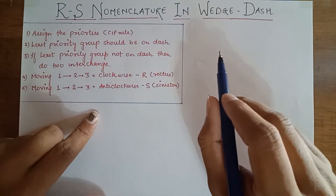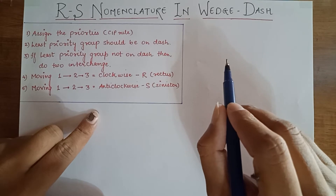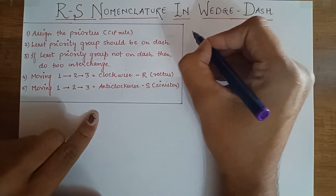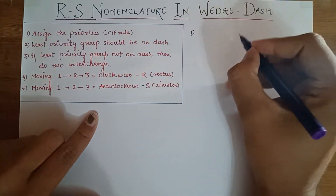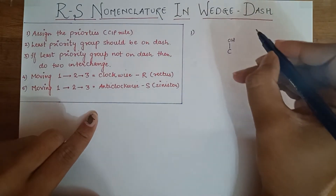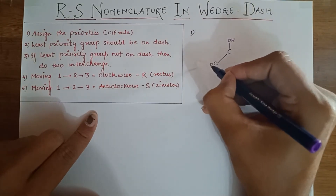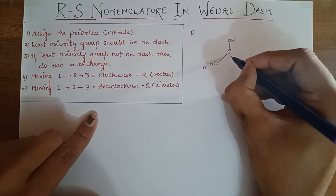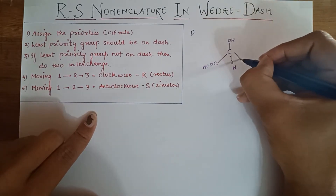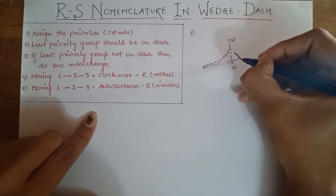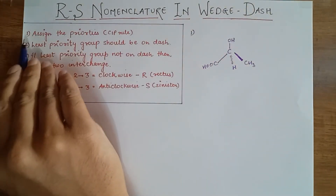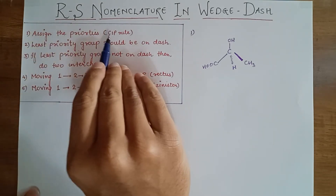Hello friends, in this video we will learn about RS nomenclature in wedge-and-dash — how to assign R or S configuration. Let us start with an example: CH3. The first step is to assign the priorities on the basis of the CIP rule.